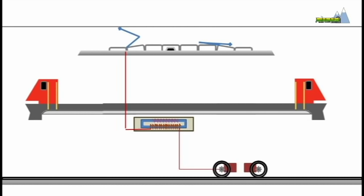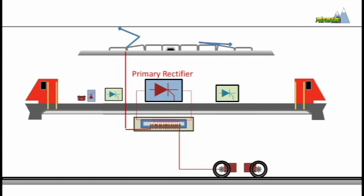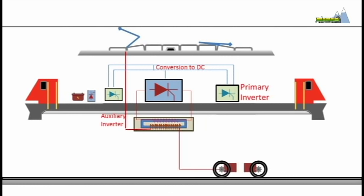From the transformer, the alternating current drawn from the overhead wires is transferred to a main rectifier which converts it to direct current. The main and auxiliary inverters convert the direct current into three-phase alternating current. The three-phase alternating current powers the traction motors which then drive the wheels.